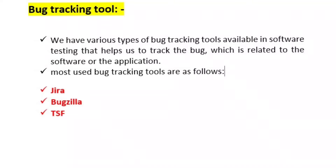Next is the Bug Tracking Tool. The Bug Tracking Tool is what we use to manage issues or defects. We need to create and assign the issue to the developer. We need to use the Bug Tracking Tool, and the actions include create, assign, reopen, and close. For example, most companies use Jira, Bugzilla, or TFS.